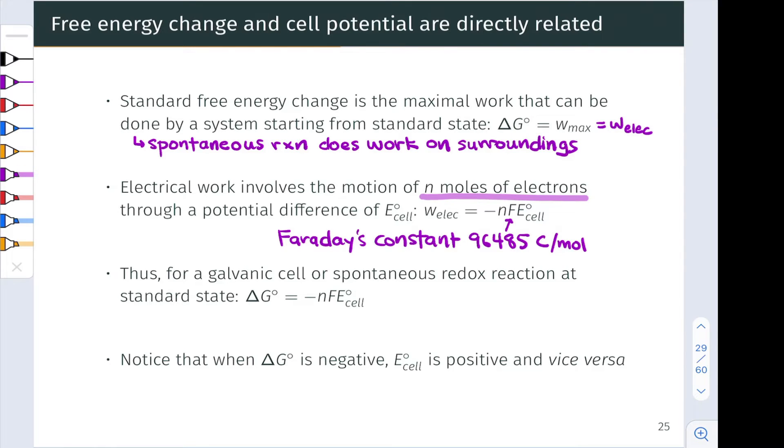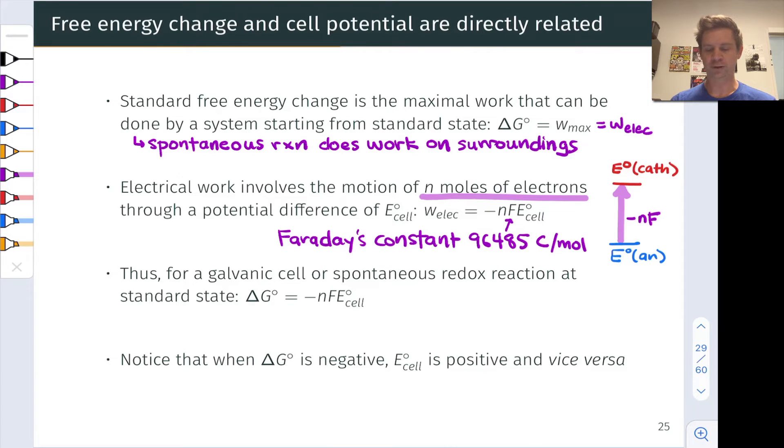Let's take a moment now to return to our picture of charge moving through a potential difference in a galvanic cell. So what happens spontaneously in a galvanic cell is that the negatively charged electrons with a charge of negative nF move from a lower potential to a higher potential spontaneously, from the anode to the cathode at higher potential. And this potential difference is the difference in the standard reduction potentials between the cathode and the anode.